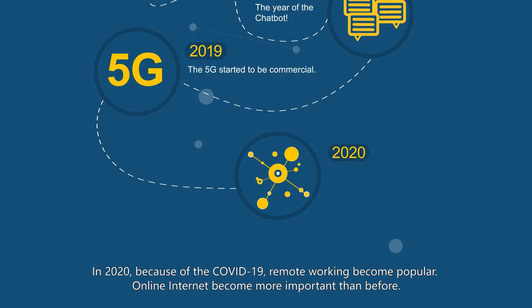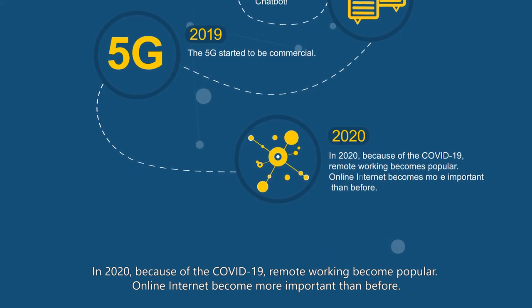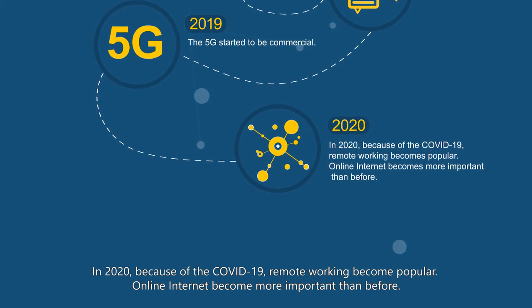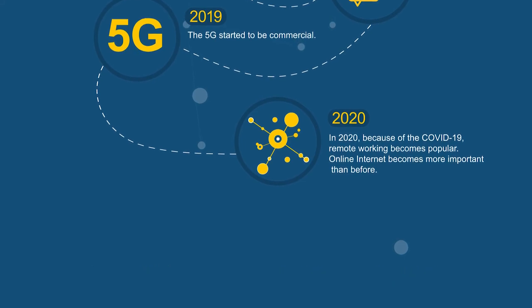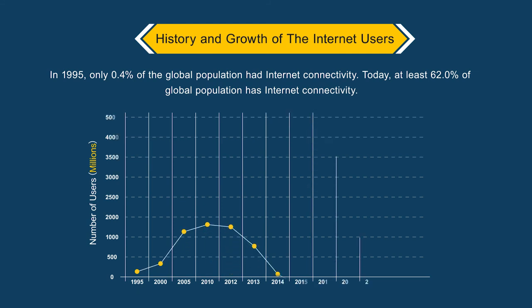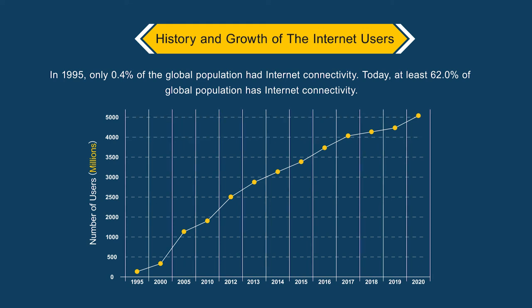Chatbots joined the internet race in 2018, the year of the chatbot. In 2019, 5G started to become commercial. In 2020, because of COVID-19, remote working became popular and the internet became more important than ever before. In 1995, only 0.4% of the global population had internet connectivity.